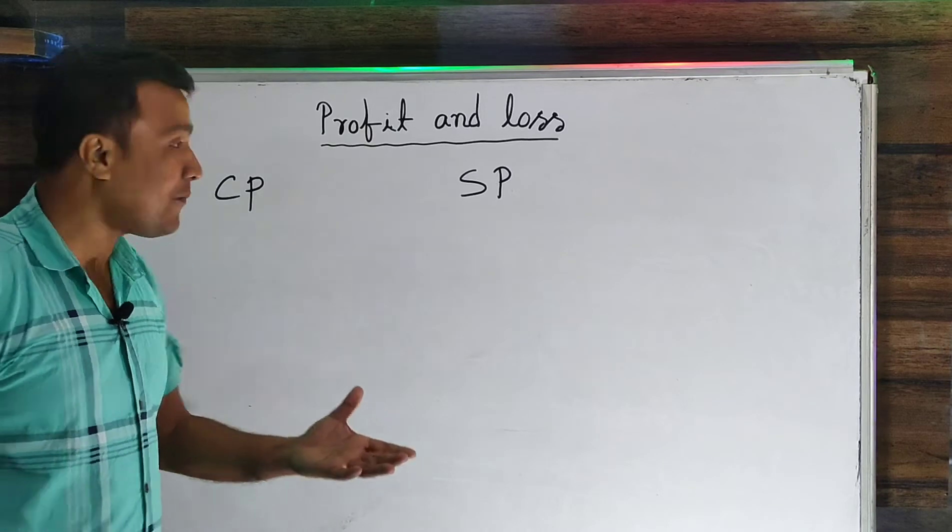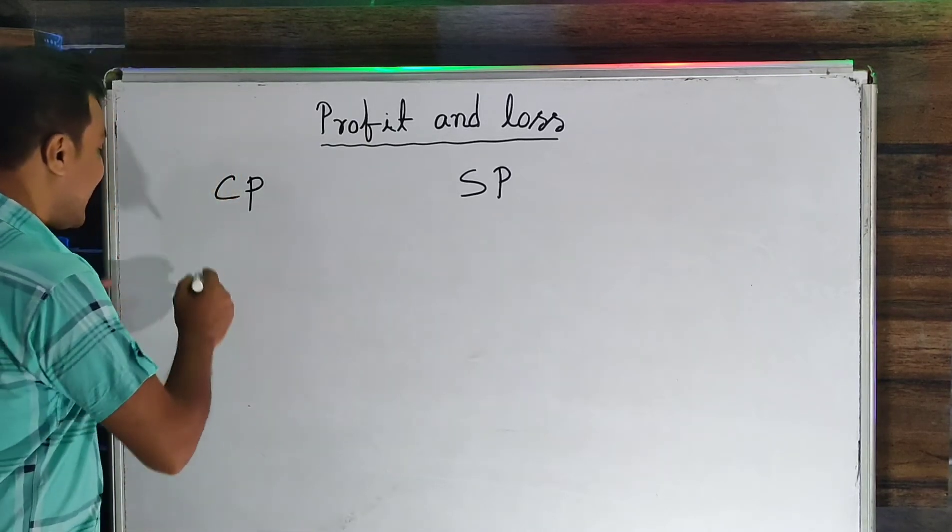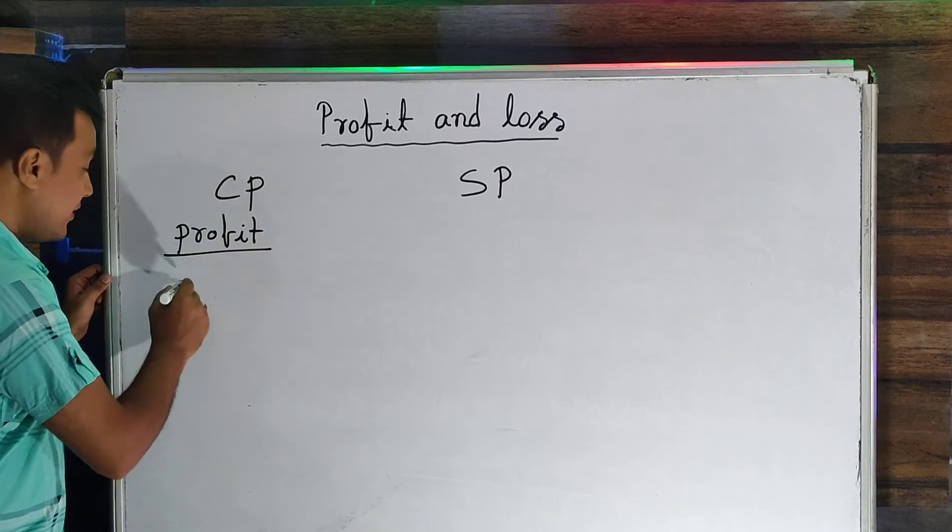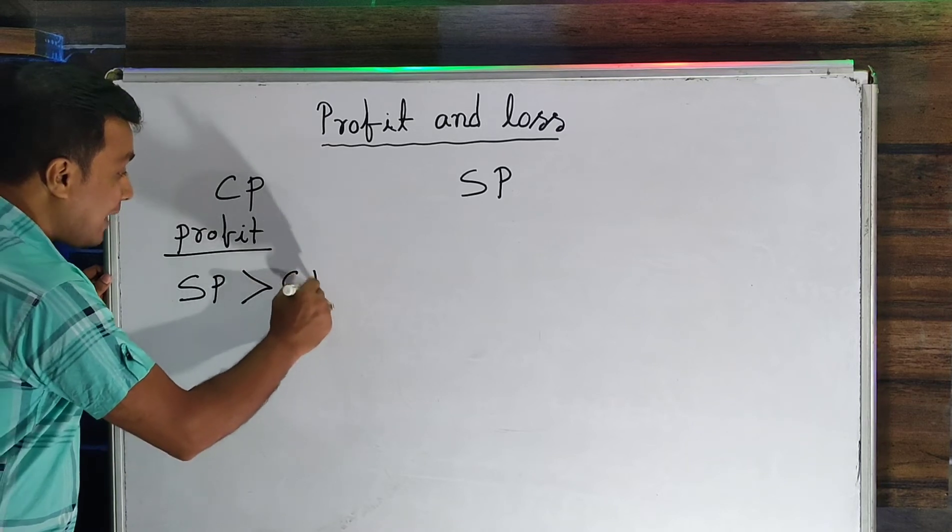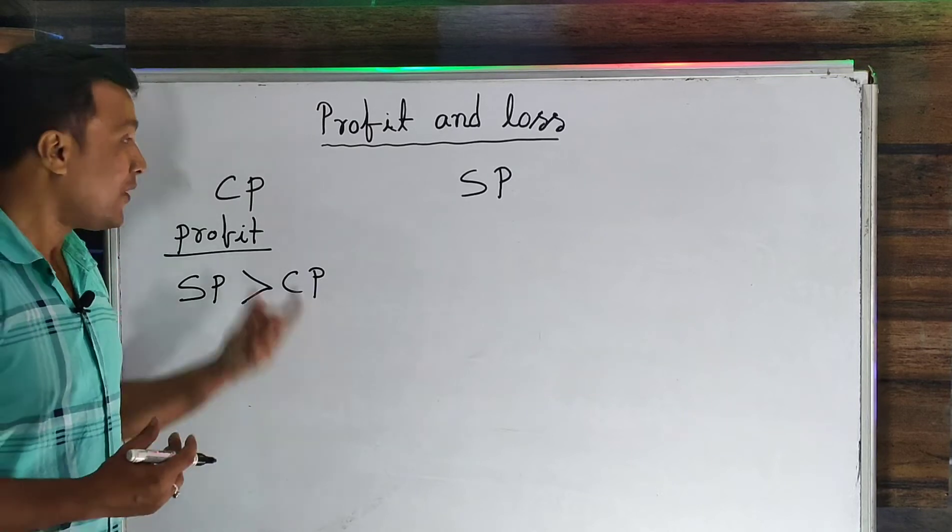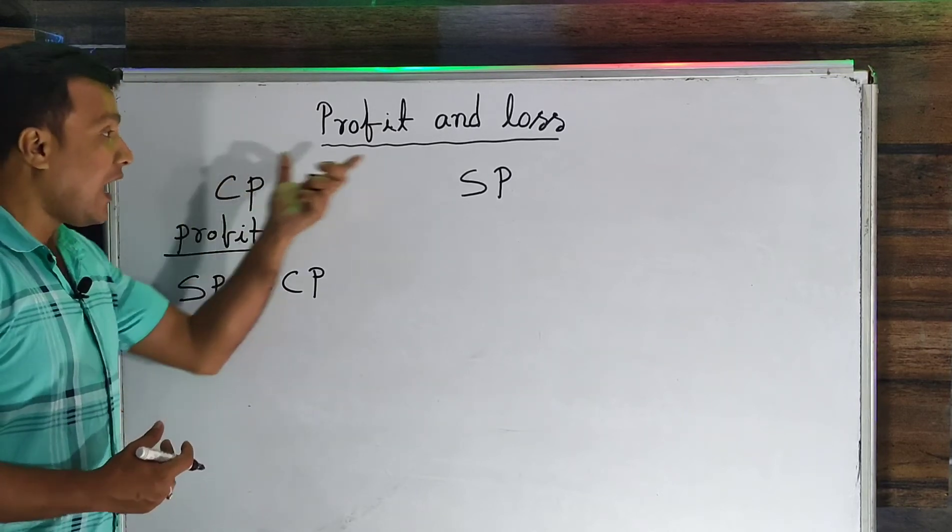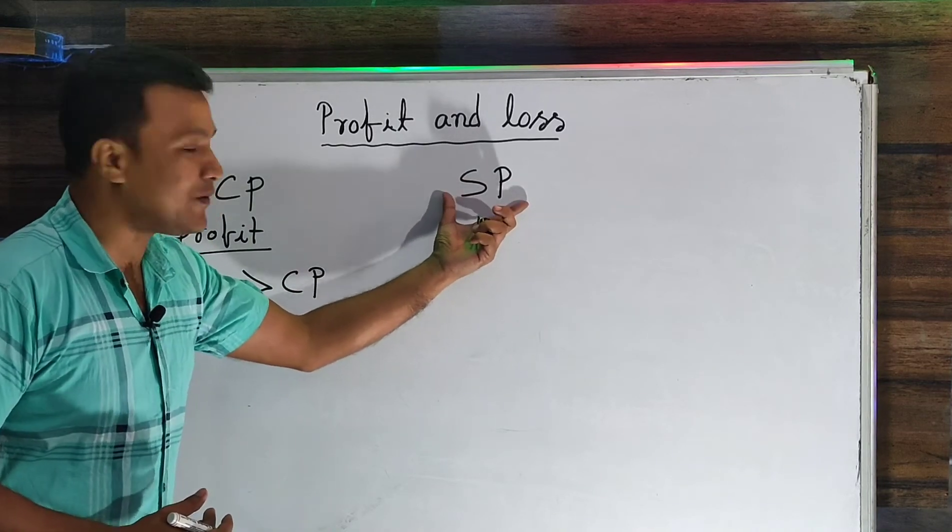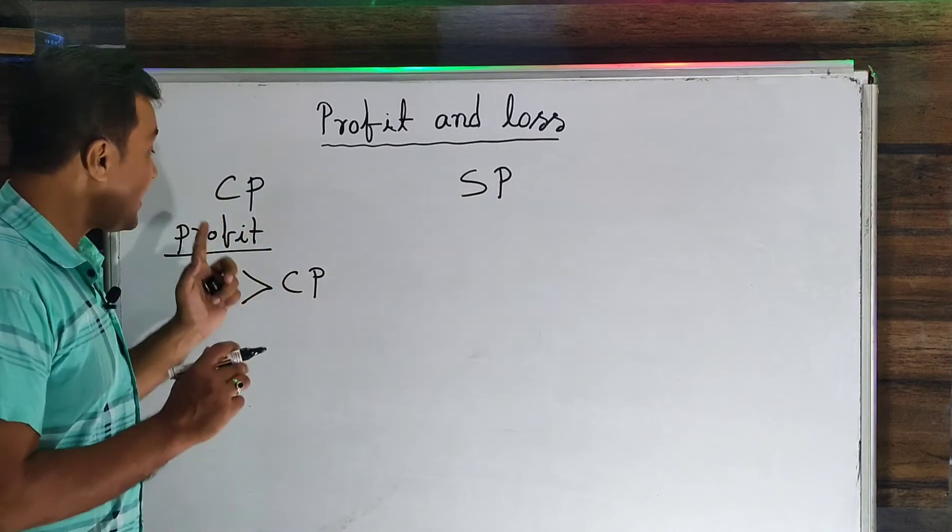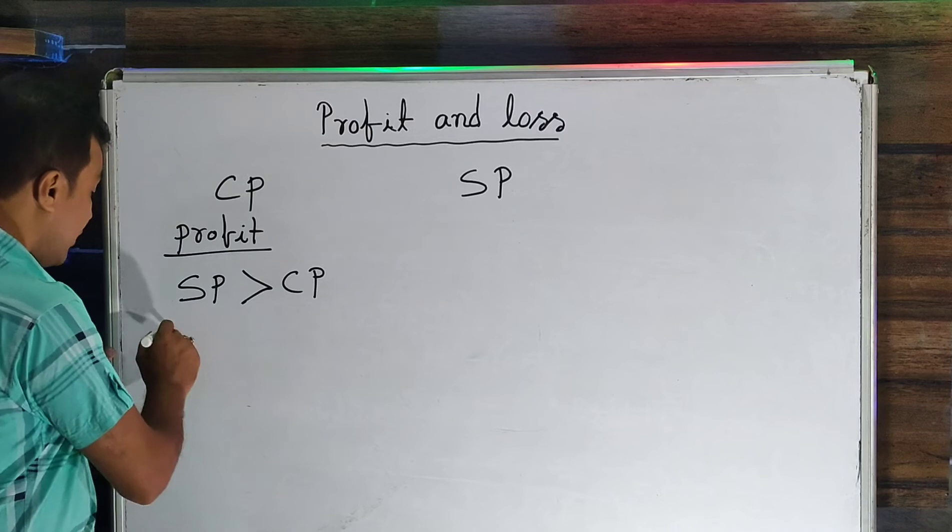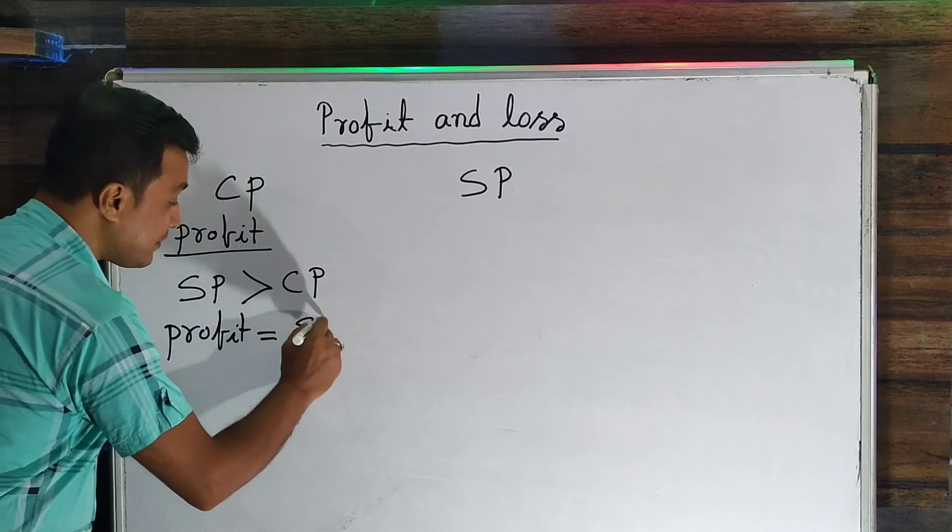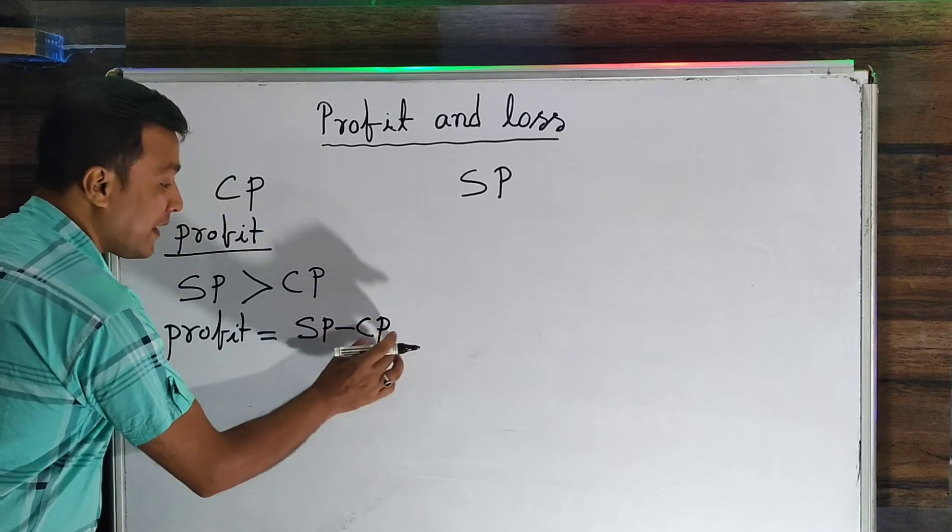What kind of profit are the profits and the loss? How could you do profit? What is the profit? If SP is greater than CP, we can see profit. If CP is 100 and SP is 120, what is the profit? The profit amount is SP minus CP, which equals 120 minus 100 equals 20 rupees.